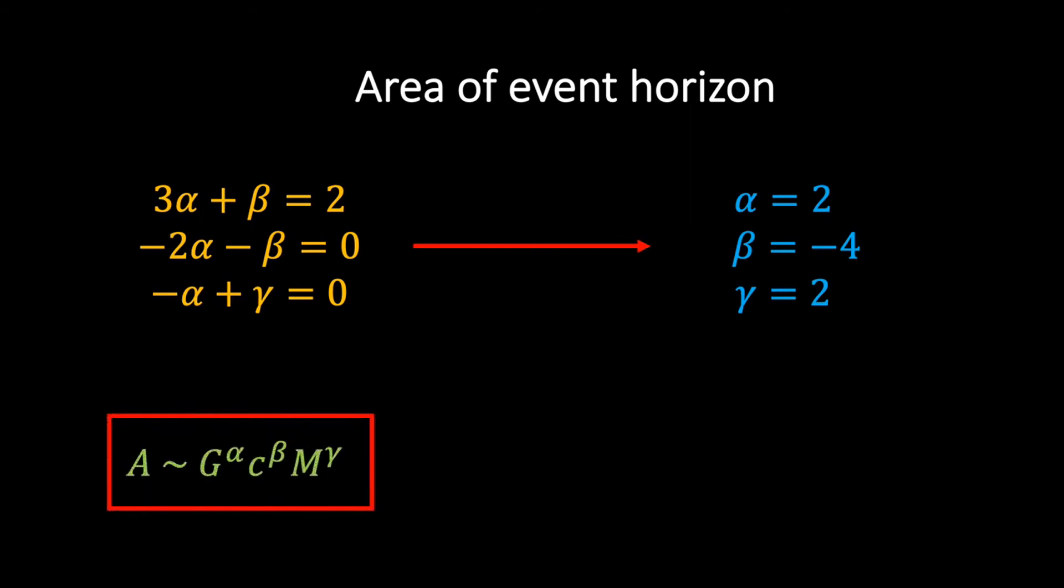After a little bit of algebra, we find that alpha equals 2, beta equals minus 4, and gamma equals 2. If we then sub these values into our original expression, we find that the area of the event horizon of a black hole is proportional to G² M² divided by c to the power of 4.